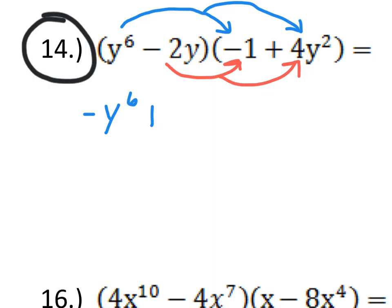So, let's start with y to the 6th. y to the 6th times negative 1 is negative y to the 6th. And then y to the 6th times 4y squared is 4y to the 8th. Now, we'll go to negative 2y. So, negative 2y times negative 1. Negative 2 times negative 1 is positive 2. And then y stays there. Negative 2y times 4y squared becomes negative 8y to the 3rd.